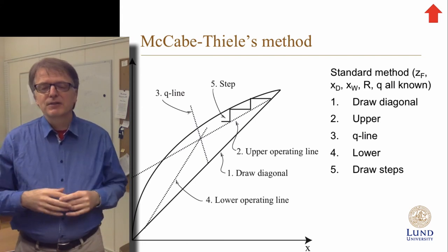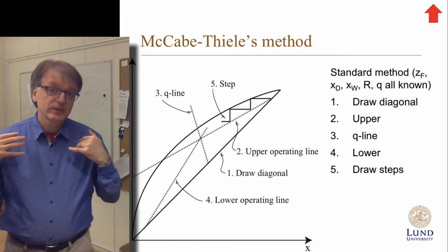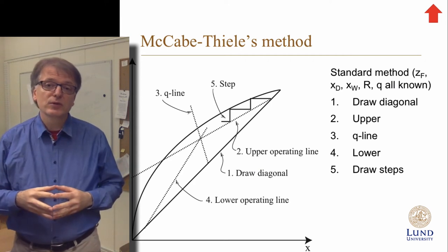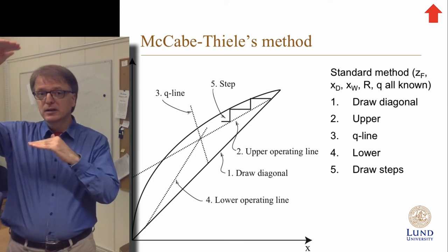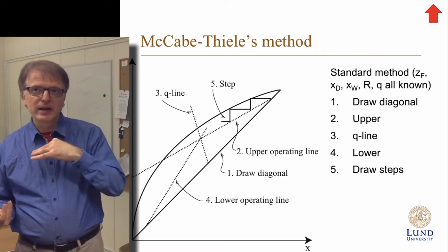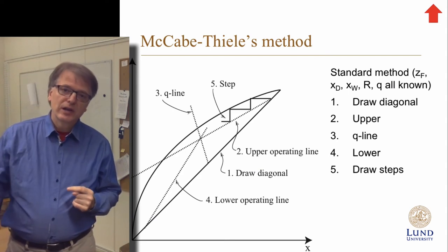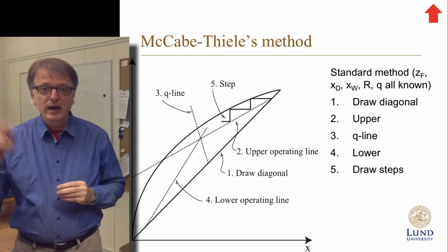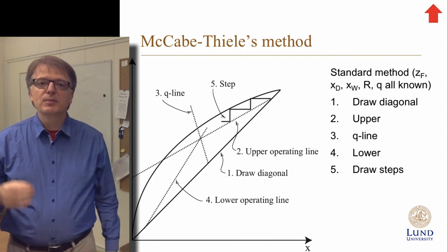We will use McCabe-Thiele's graphical method to solve distillation problems in this course. You start with a system curve and draw the diagonal, then make a mass balance for the part of the distillation column above the feed — the upper operating line — then draw a Q line, which combines mass balances and an energy balance at the feed, then draw the lower operating line for what happens below the feed. Finally, you draw steps — triangles — and each such triangle is an equilibrium stage.